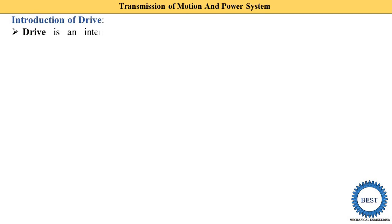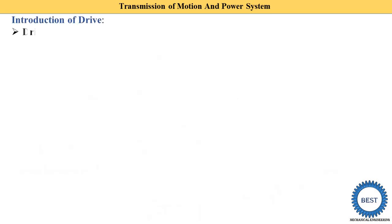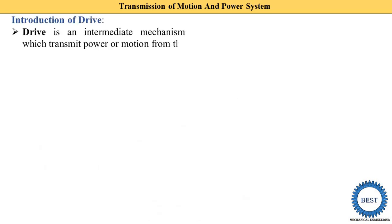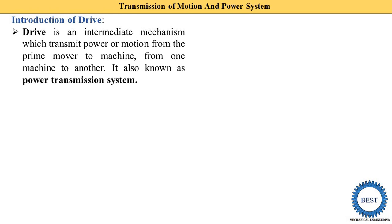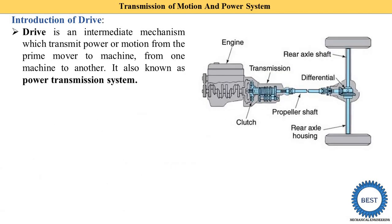In various images we can see gear drives, belt drives, and chain drives — these are various types of drives. A drive is an intermediate mechanism which transmits power or motion from the prime mover to the machine, or from one machine to another. It is also known as a power transmission system.